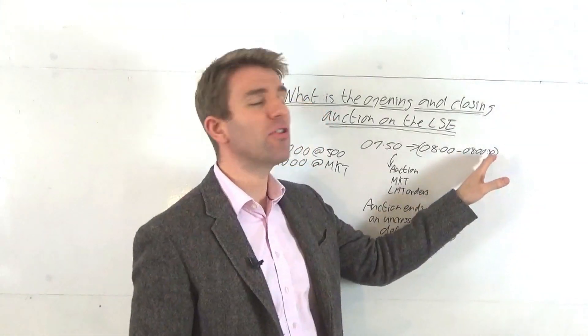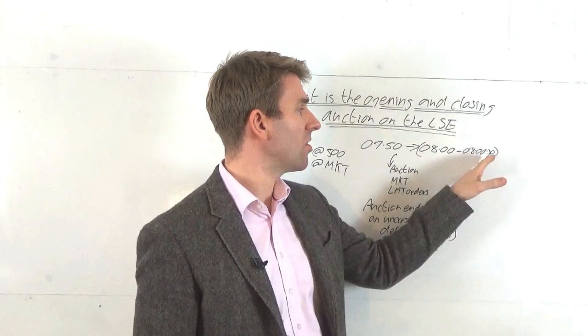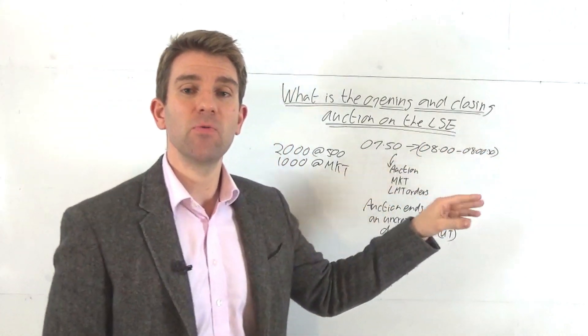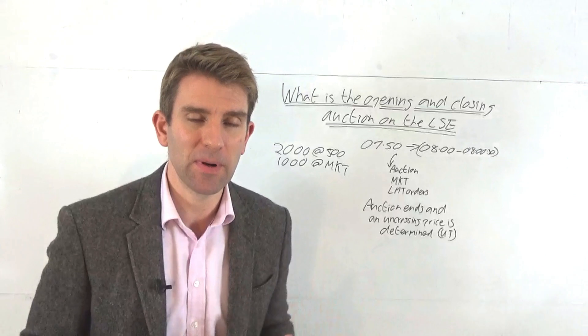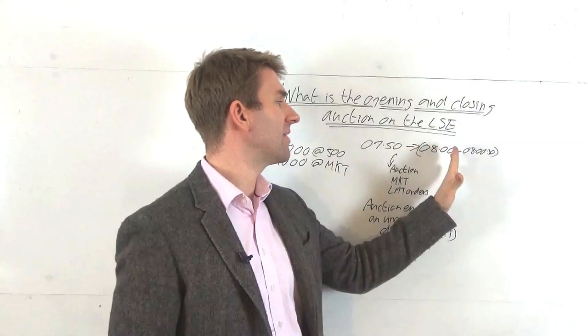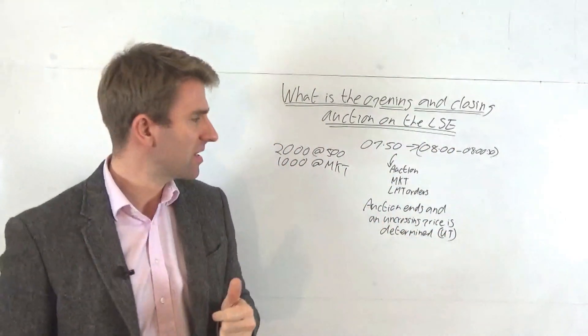So there's a randomized 30-second period from 8 o'clock when the auction can close to stop that manipulation. That's why we don't often get the close bang on 8 - it could be 8:01, up to 30 seconds.